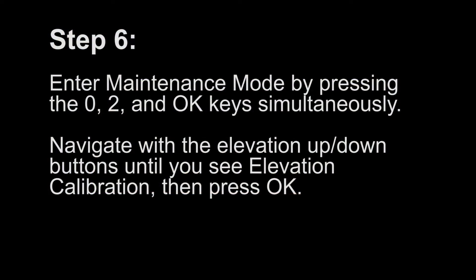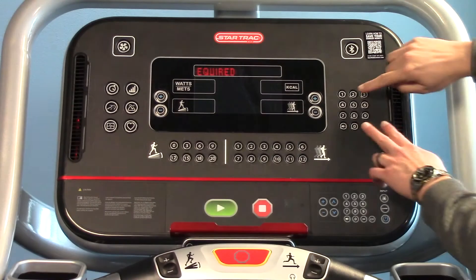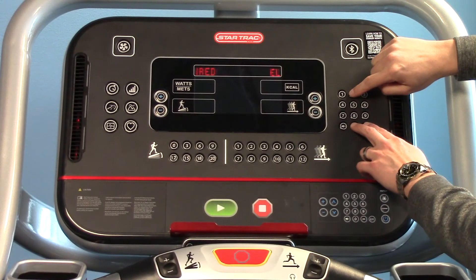Step 6. Enter maintenance mode by pressing the 0, 2, and OK keys simultaneously. Navigate with the elevation up or down buttons until you see elevation calibration, then press OK.